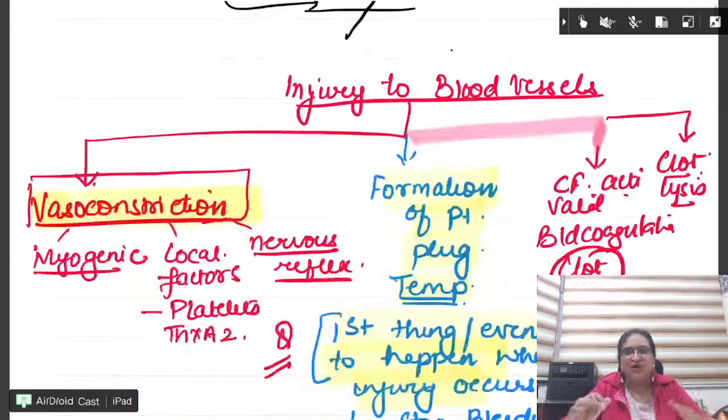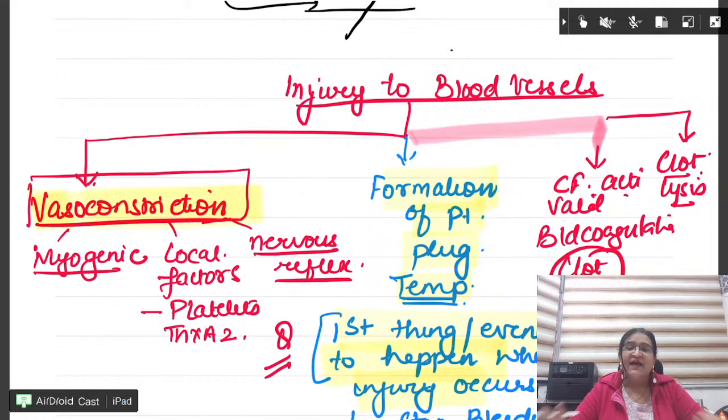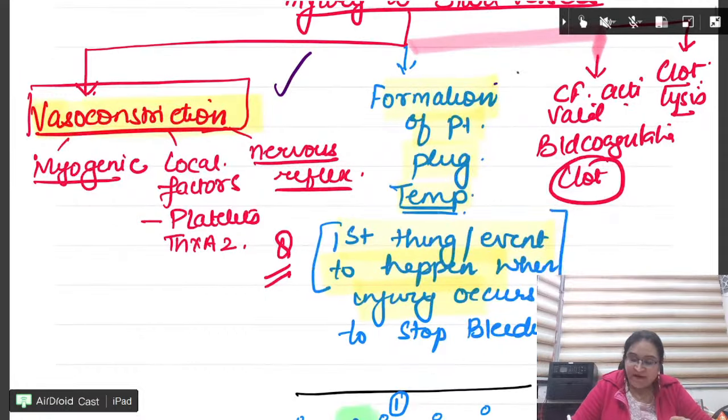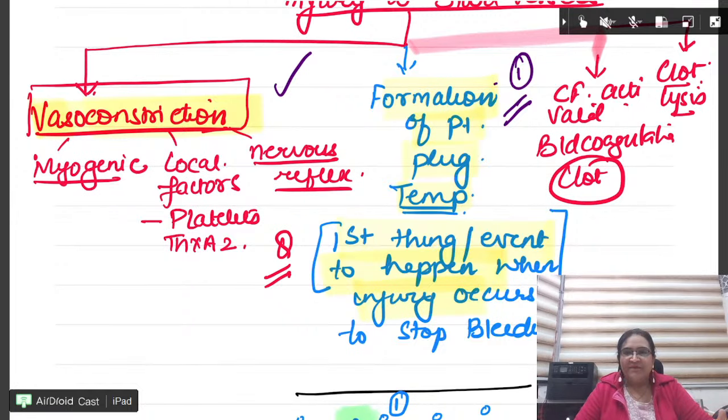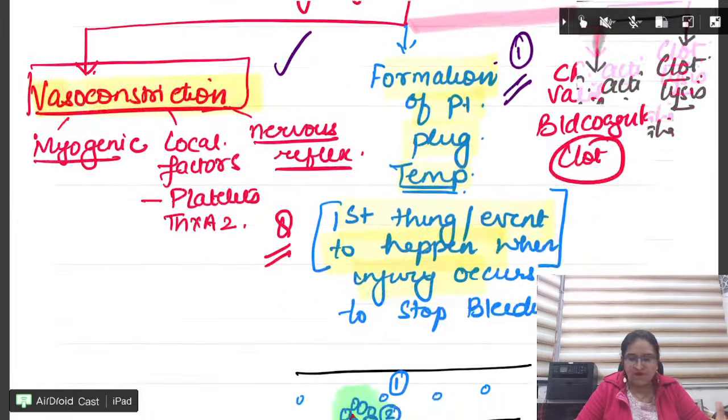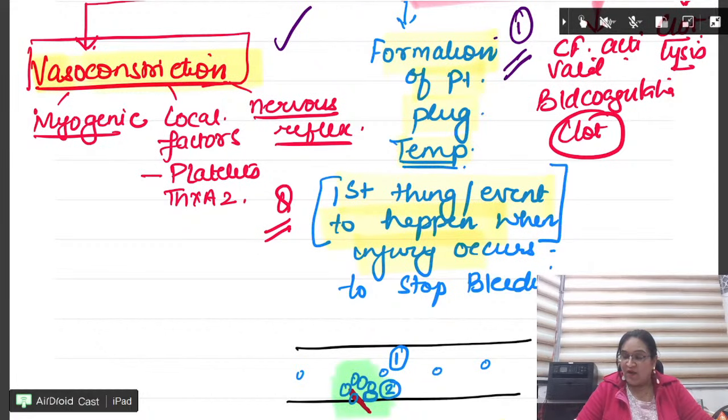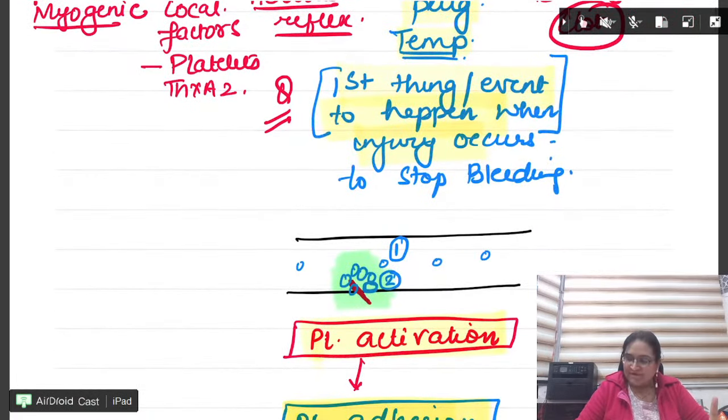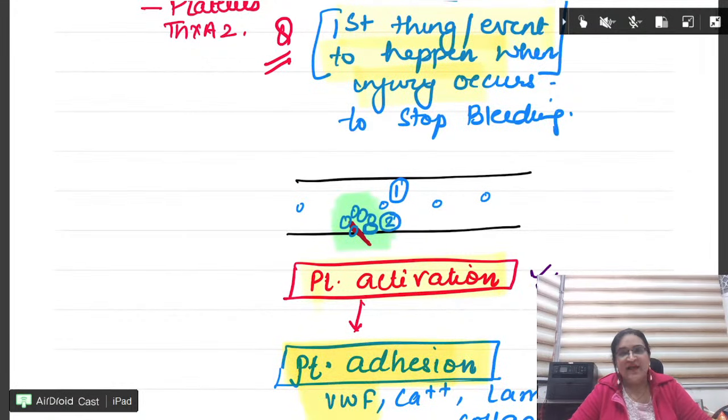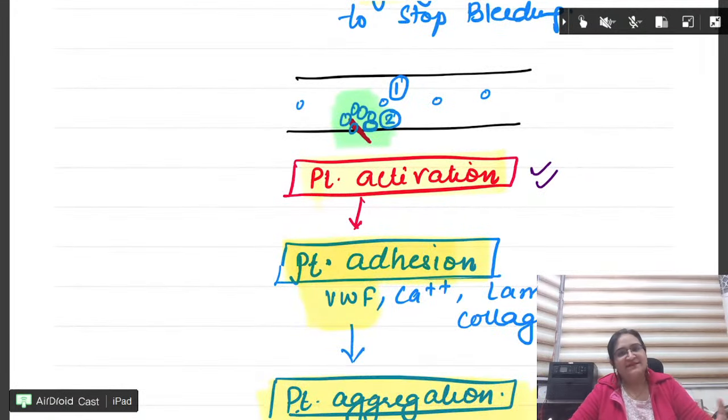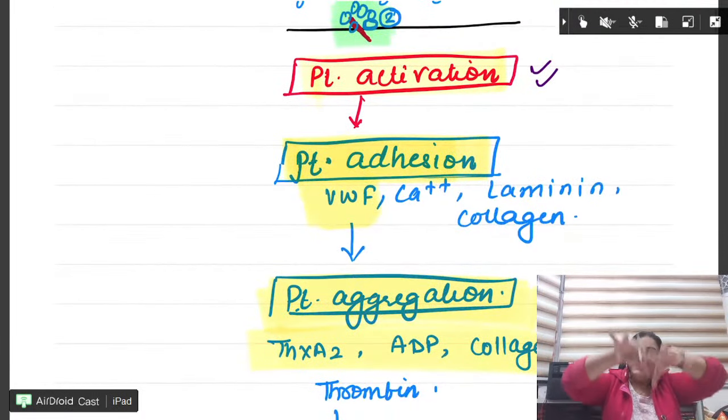Now, hemostasis, you all know what it is. Injury occurs, you have to stop the bleeding. Injury to the blood vessels, the first thing which happens is vasoconstriction. But that is not that efficient to stop if it is a big cut. What is the first thing which comes in your question is formation of a temporary platelet plug. First event to happen. Vasoconstriction, if in the option, you know what to mark.